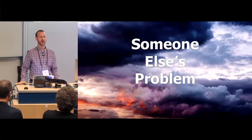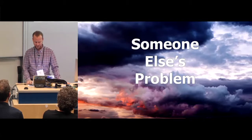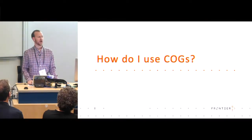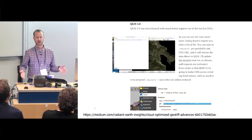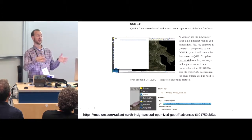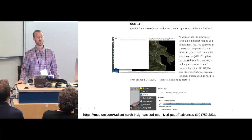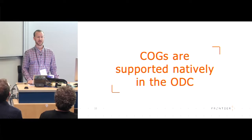The cloud means all that complexity becomes somebody else's problem, which as someone who implements technical systems is really nice. COGs are a great way to store enormous volumes of data somewhere that someone else manages, and you can just go and access it. QGIS 3 comes with support out of the box — you can go to S3, find Digital Earth Australia's data store, copy a link, paste it into QGIS and start using it. We spoke to a fellow from Queensland who stores a 600 gigabyte GeoTIFF on S3 and just streams it into QGIS. COGs are supported natively in the Open Data Cube — very convenient.